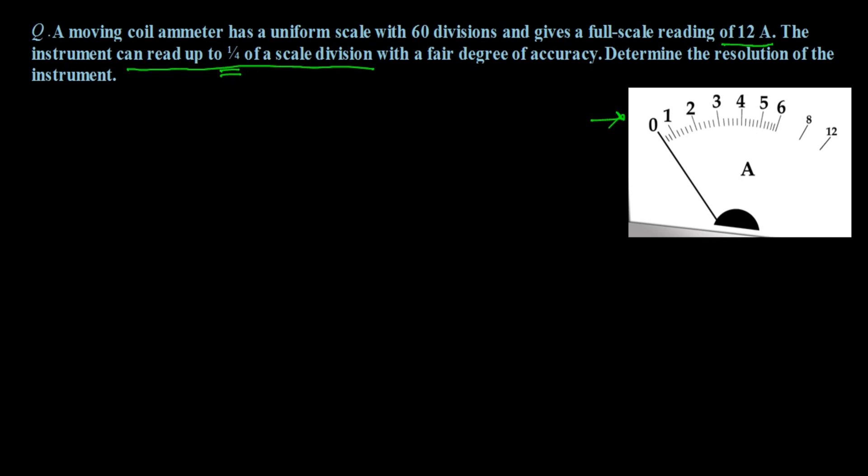Now, 1 scale division is equal to 1 divided by 5, that means 0.2 ampere. The instrument can read up to 1/4th of scale division, that means 0.2 into 1 by 4, which equals 0.05 ampere. This is the resolution of the instrument.